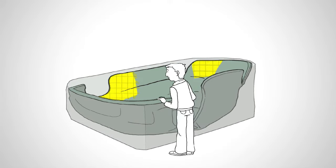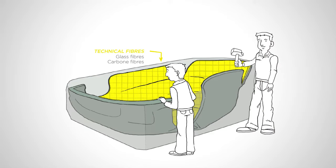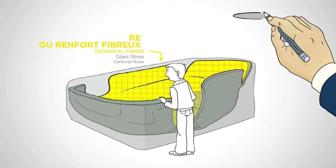The first component is most often made up of technical fibers, such as glass or carbon fibers, and is used to reinforce the strength of the product. This is referred to as reinforcement or fiber reinforcement.